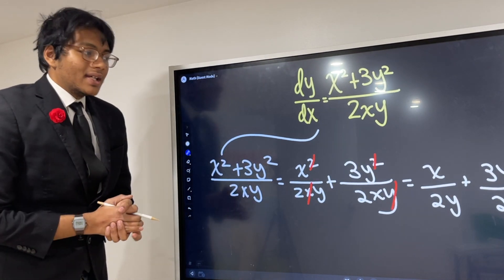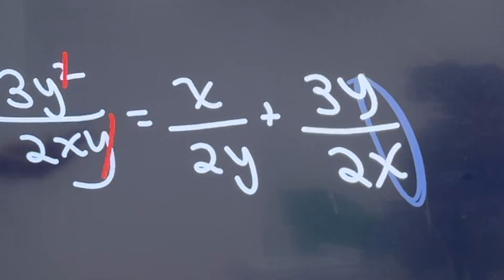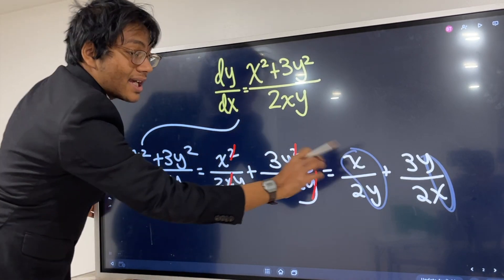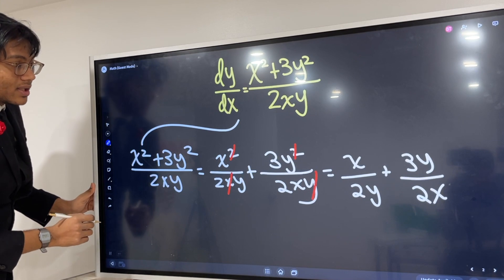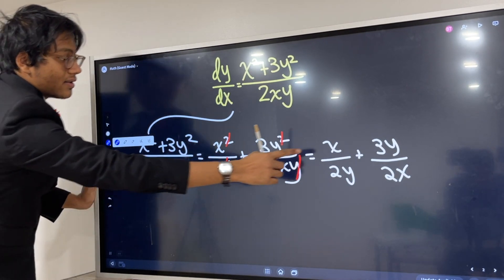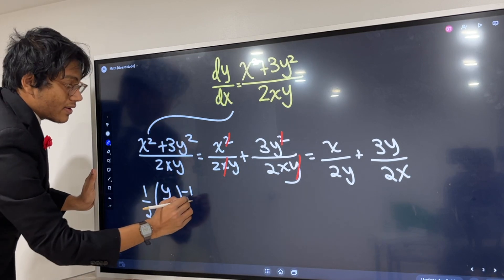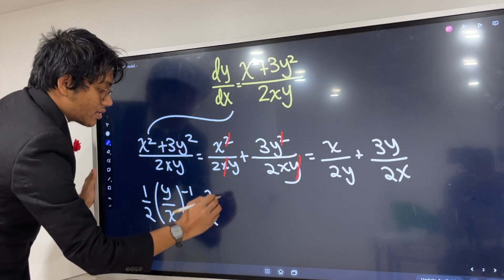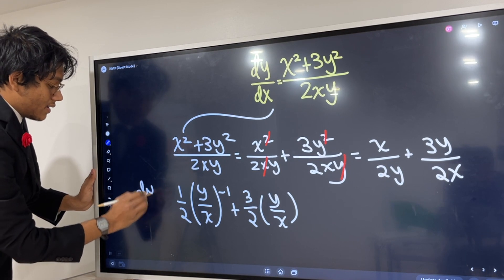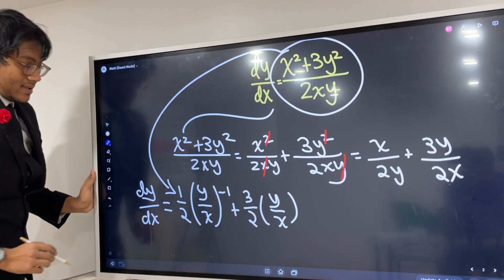Where is that y over x? Well, 3y over 2x gives us one y over x. And x over 2y can be written as y over x to the negative first power. So we can rewrite the whole thing as: one half times (y/x) to the negative first power plus 3/2 times (y/x), which equals dy/dx.